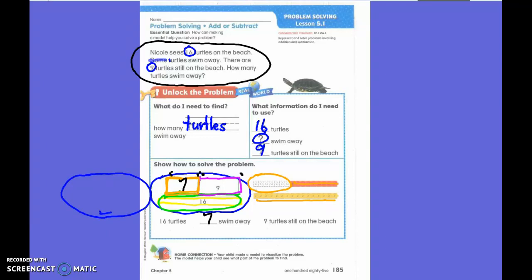So does seven plus nine equal sixteen? Yes. It does. And that's how we check ourselves.